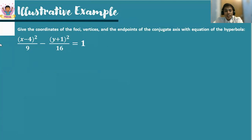Give the coordinates of the foci, the vertices, and the endpoints of the conjugate axis with equation of the hyperbola: the quantity (x minus 4) squared over 9 minus the quantity (y plus 1) squared over 16 is equal to 1. Based on this given example, the x part is positive and the y part is negative. Therefore, this is an example of a horizontal hyperbola.